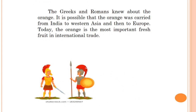The Greeks and Romans knew about the orange. It is possible that the orange was carried from India to western Asia and then to Europe. Today the orange is the most important fresh fruit in international trade. India was a very prosperous nation from early times; various countries came to India to trade spices, cloth, and so on. When these countries came to India they found orange, and from India it went to western Asia — countries like Iran, Iraq, Syria, Turkey — and from there it passed on to Europe. Trade means business between companies or countries.